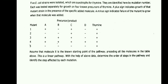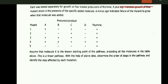The second question: five E. coli strains were isolated which are auxotrophs for thiamine. They are identified by mutant number. Each was tested separately for growth on known precursors of thiamine. A plus sign indicates growth and a minus sign indicates no growth. Assume that molecule X is the known starting point of the pathway, preceding all molecules in the table. This is a linear pathway. Using the above data, determine the correct order of the pathway and the step affected by each mutation.